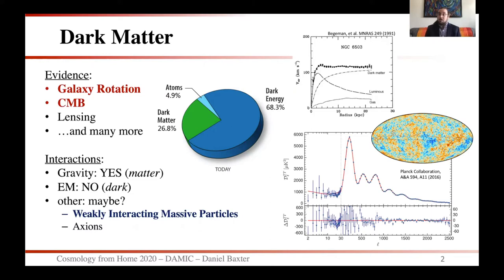As far as whether dark matter has to have some other type of interaction, it might, and if it does, we could look for that. There are two main particles that people propose: one is weakly interacting massive particles, or WIMPs, and the other is axions. There are many other models, but these are the two leading candidates. I'm not going to have time today to talk about axions, so I'm going to focus on WIMPs.